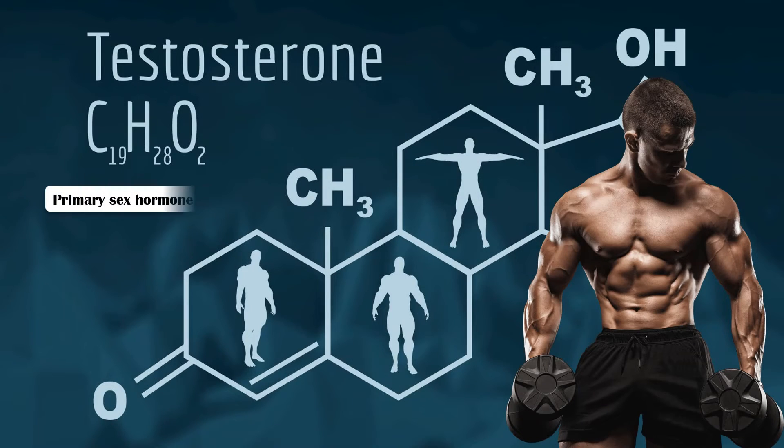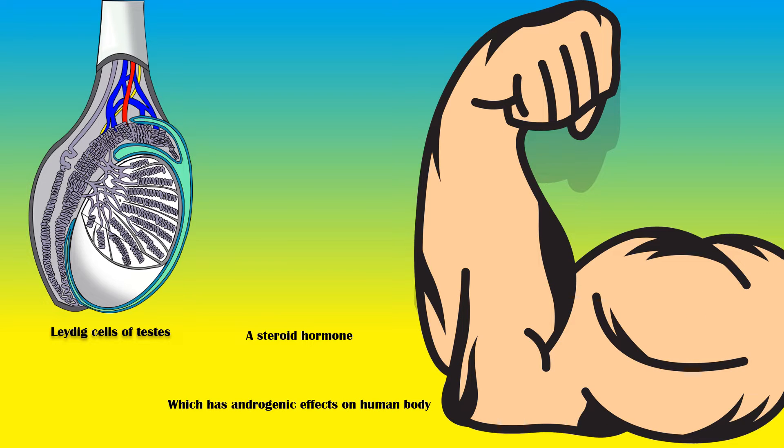Testosterone is the primary sex hormone in males. It is secreted by the interstitial cells of Leydig, located within the testis. Testosterone is a steroid hormone which has androgenic effects on the human body.